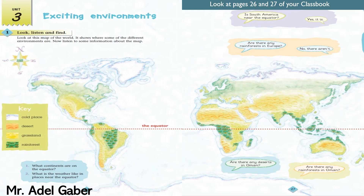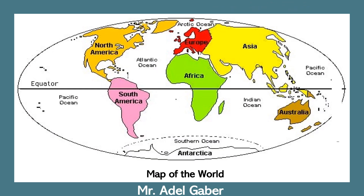Look at pages 26 and 27 of your class book. It's Unit 3. Look at the title of the unit. Yes, exciting environments. What do you think this unit is going to be about? It will be about some of the different environments in the world. Look at the map of the world.